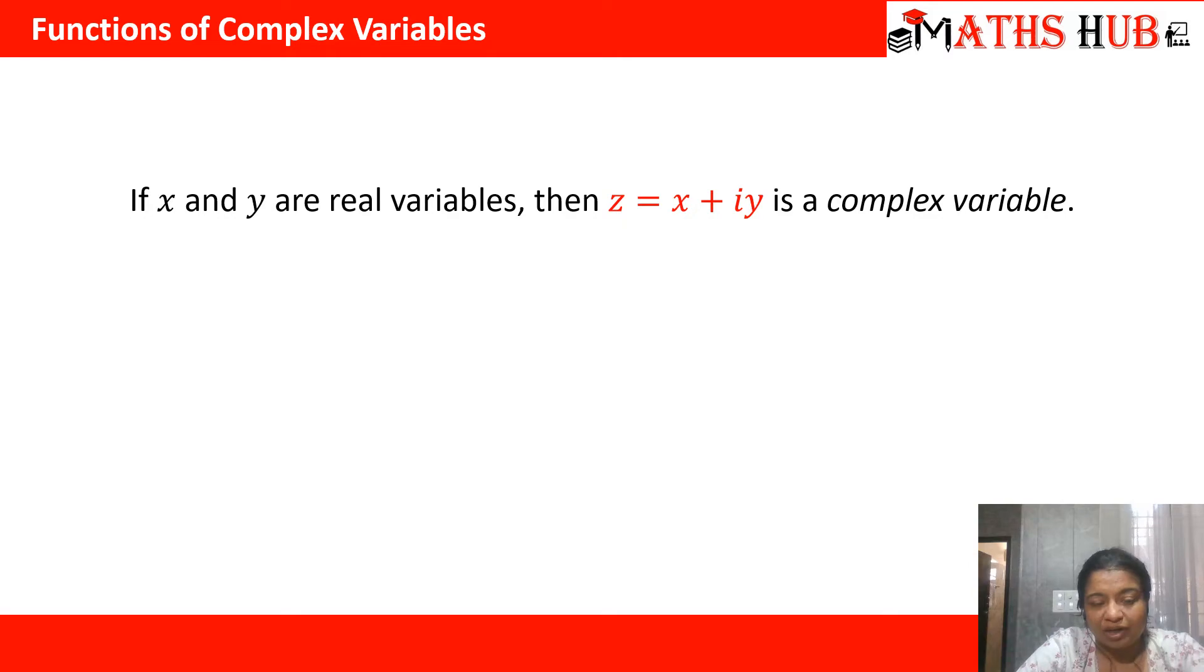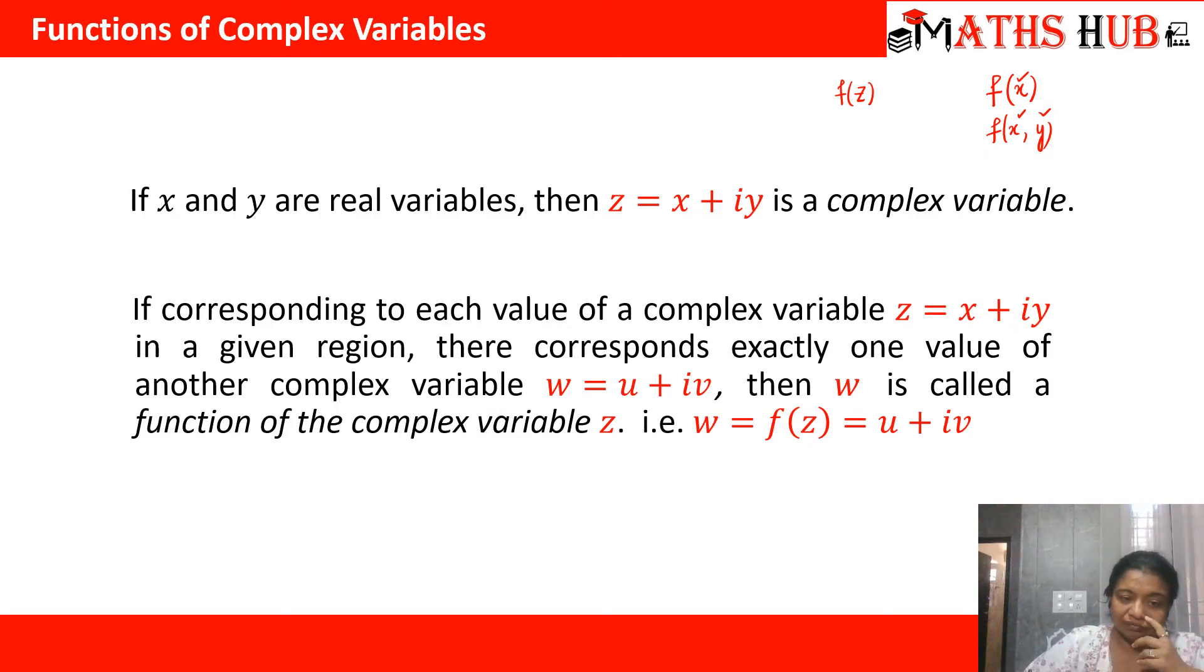So now, let us understand what are basically functions of complex variables. So far, we have done a function of one variable f of x, or we have done a function of two variables x and y. Now, here x and y are both real variables. When we say that a function is dependent on a complex variable z, how is z defined? z is defined as x plus iota y, where both x and y are real variables. That makes z as a complex variable. So any function that is mapping z to f of z is called a function of complex variable.